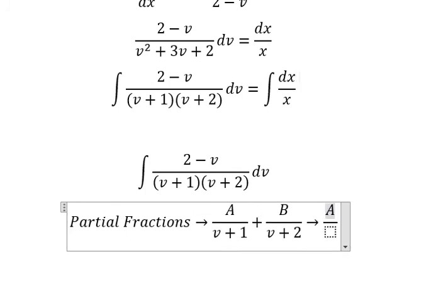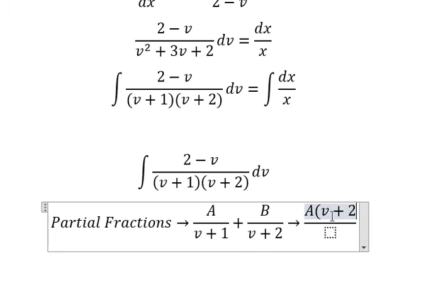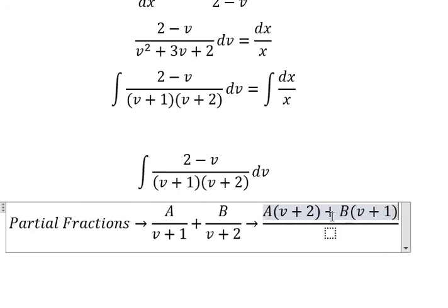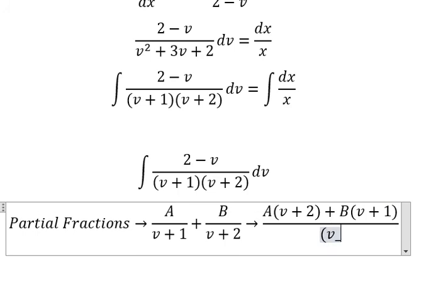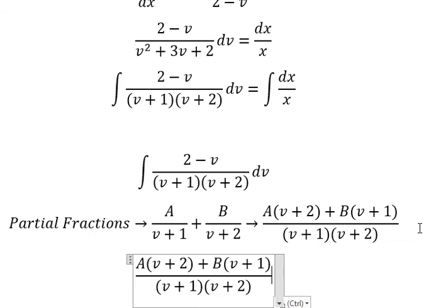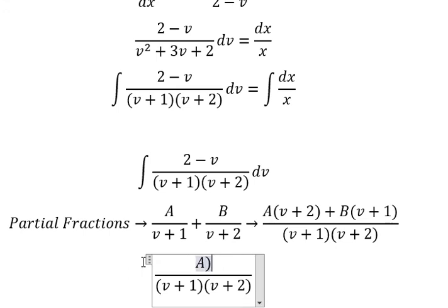So we have A multiplied by v plus 2, B multiplied by v plus 1. And now we have A multiplied by v and number 2, B with v and number 1, so we will have like this.